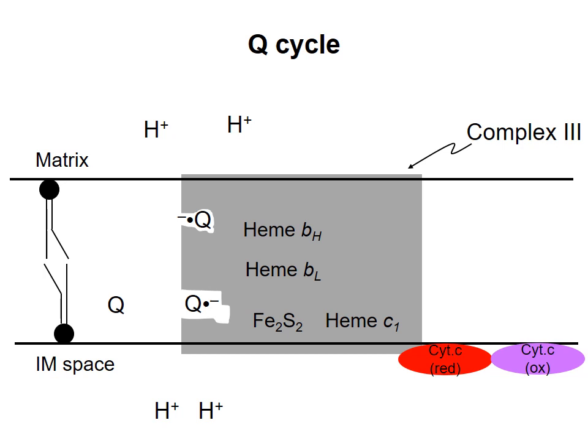This new QH2 will lose its electrons just the same way the first one did. Upon loss of an electron, two more protons are released into the intermembrane space. The electron goes from Q to the iron-sulfur center, to heme C1, and then to a second cytochrome C, which is reduced.